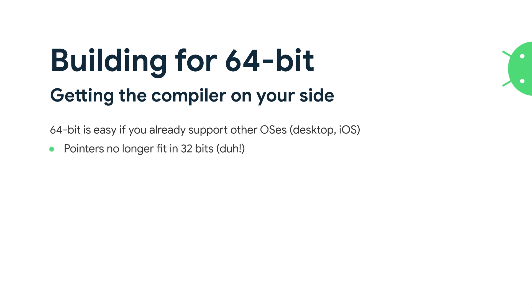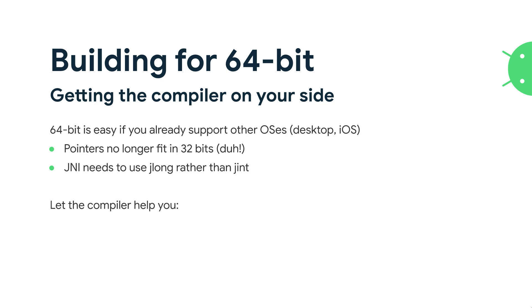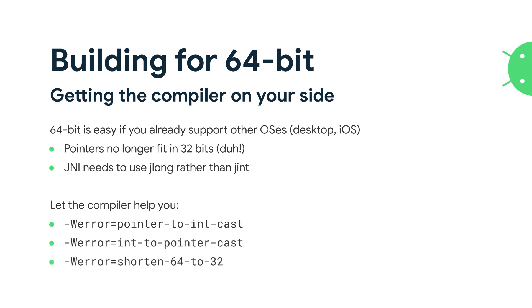You may have seen this if you've done 64-bit migrations for other platforms or for your app. The main one is that pointers no longer fit in 32-bits, and especially things like int are 32-bit only, so you'll need to update those. Our compiler flags — these three — can all help you identify the areas where you might still be compiling to 32-bit.